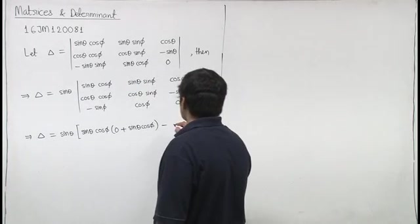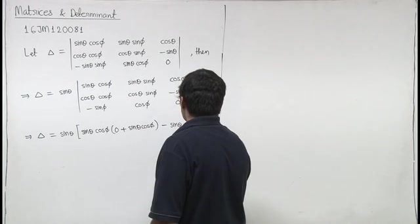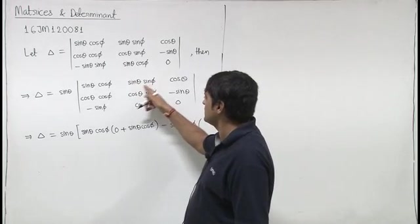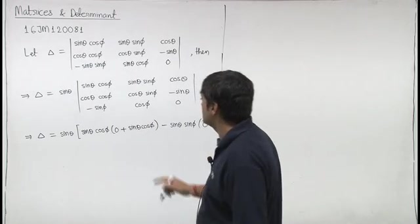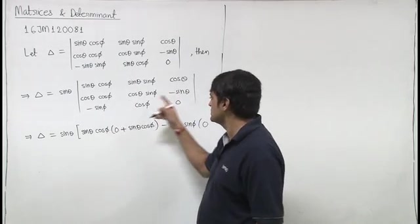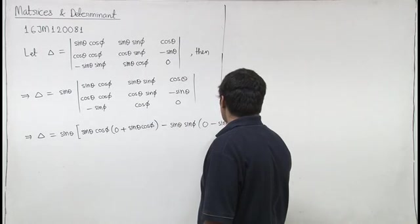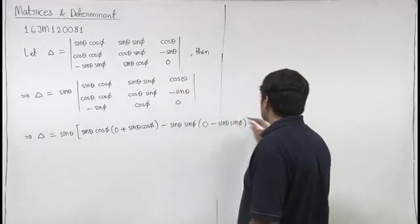Then minus sin theta into sin phi into minus sin theta into sin phi, this is cos theta cos phi into 0, this is 0 minus this into this, this is minus sin theta sin phi, finally plus cos theta into.